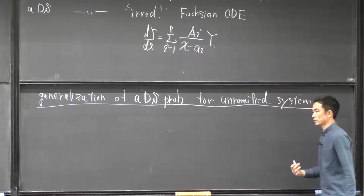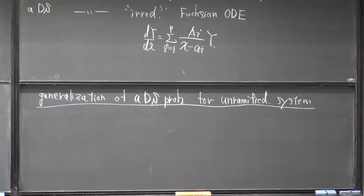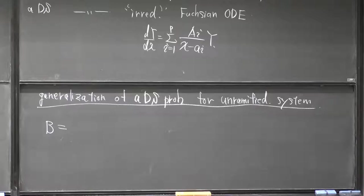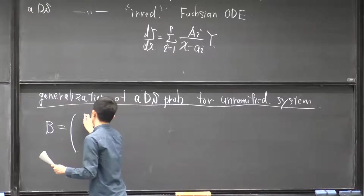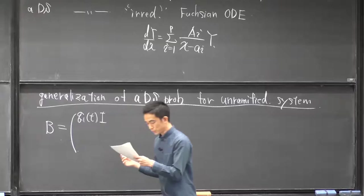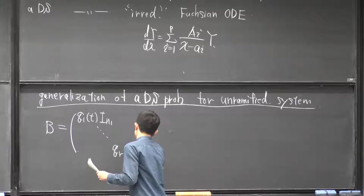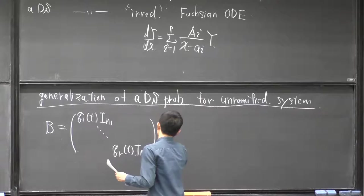Next I would like to talk about some generalization of the additive Simpson problem for differential equations with unramified irregular singularities. I would like to give a brief review of the Stokes-treated normal form. Let us consider the following type of matrix, which someone calls the formal treated normal form.